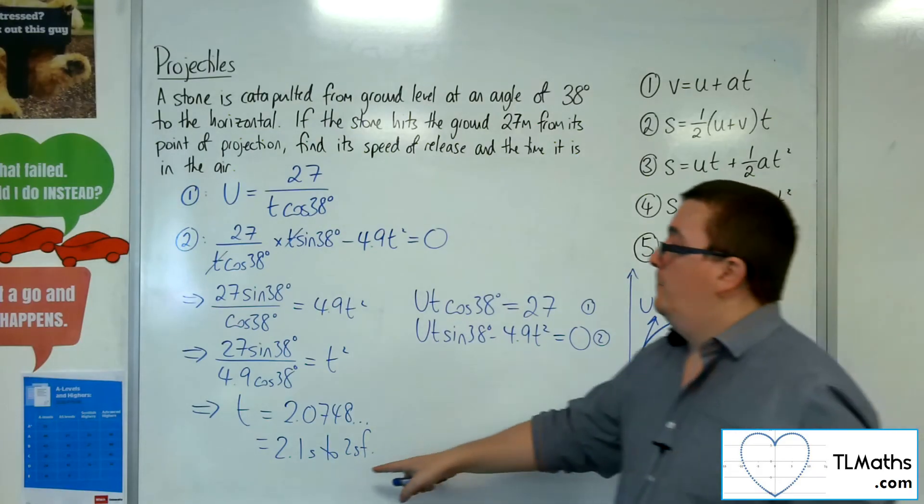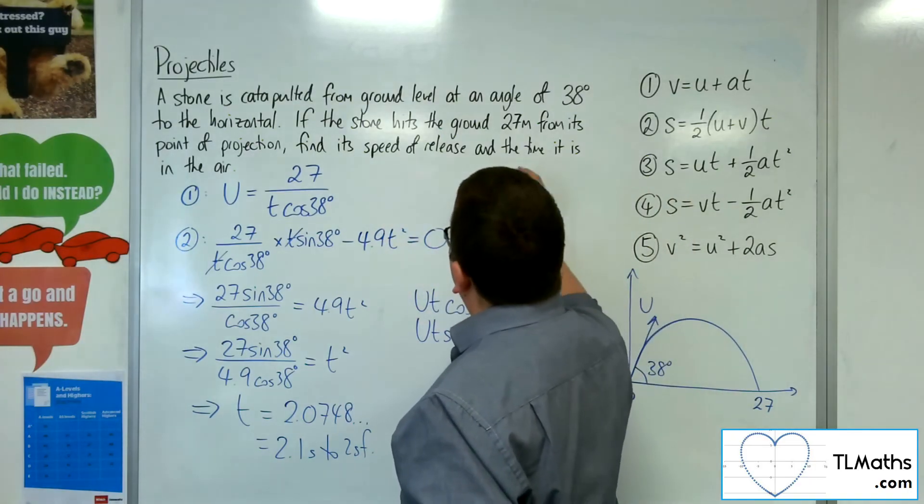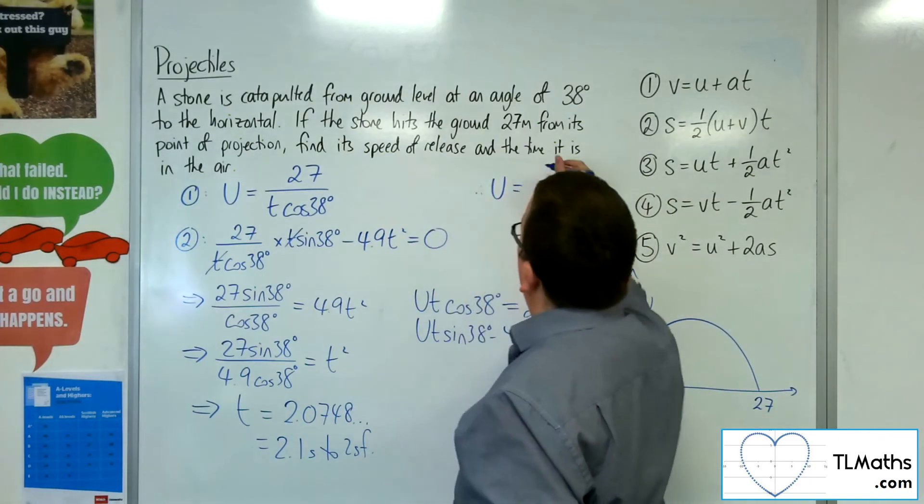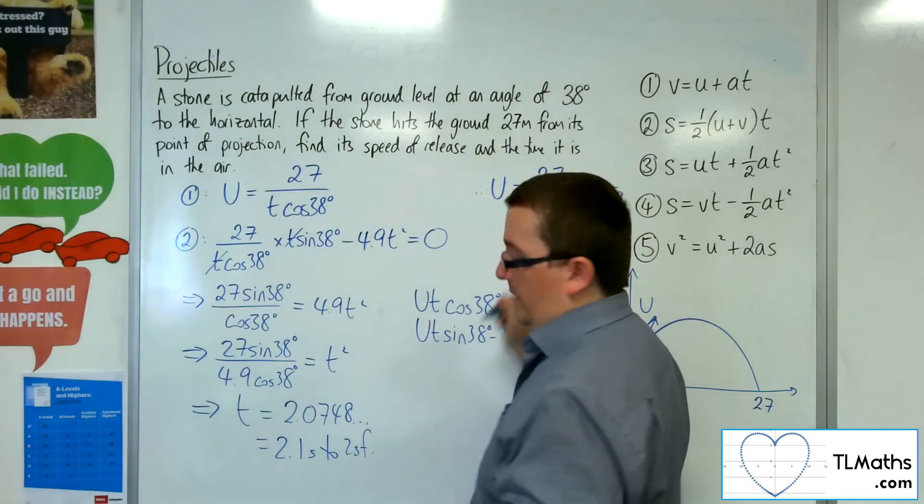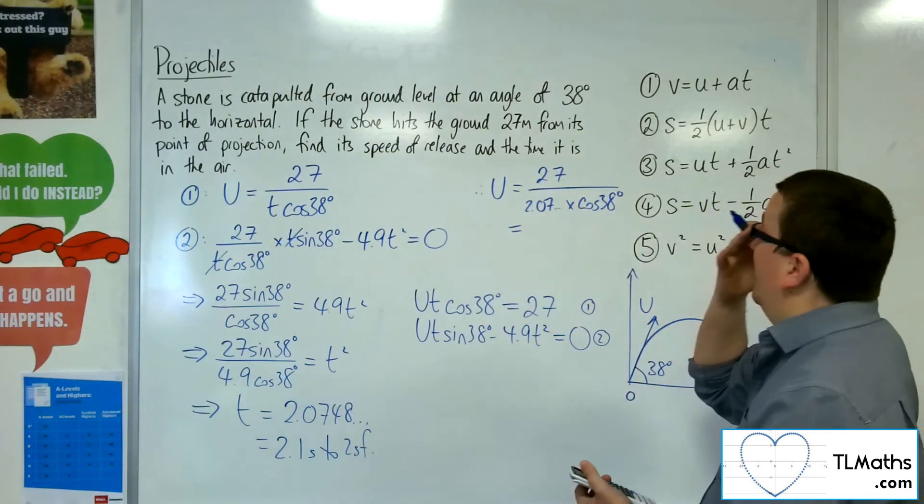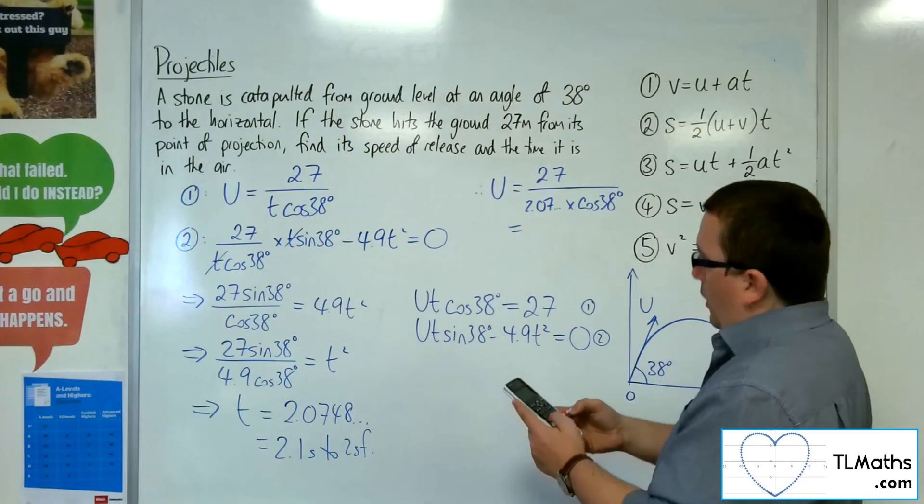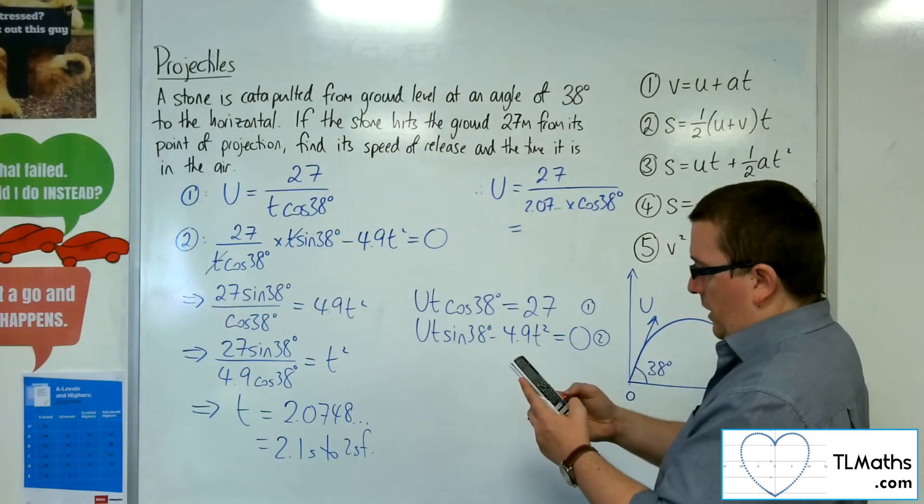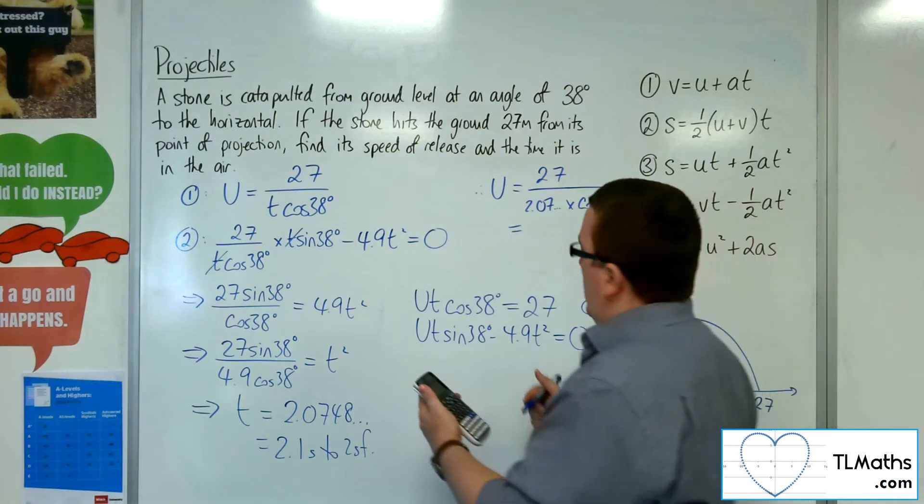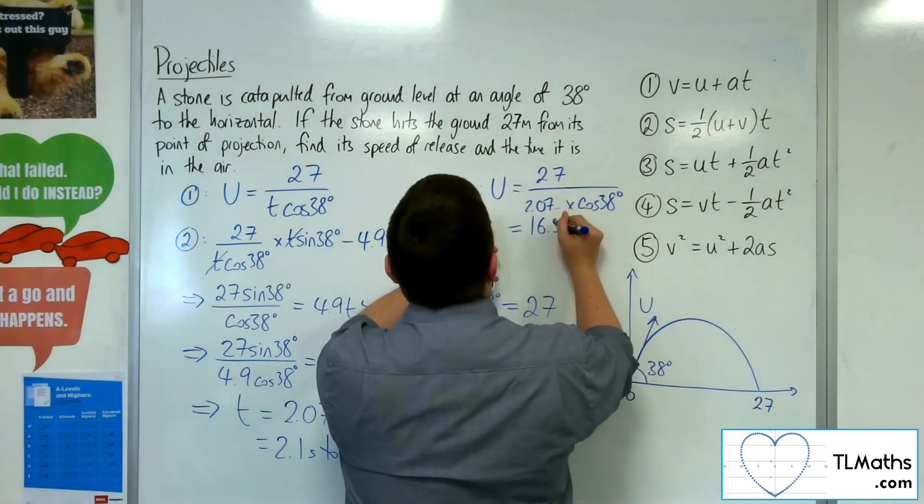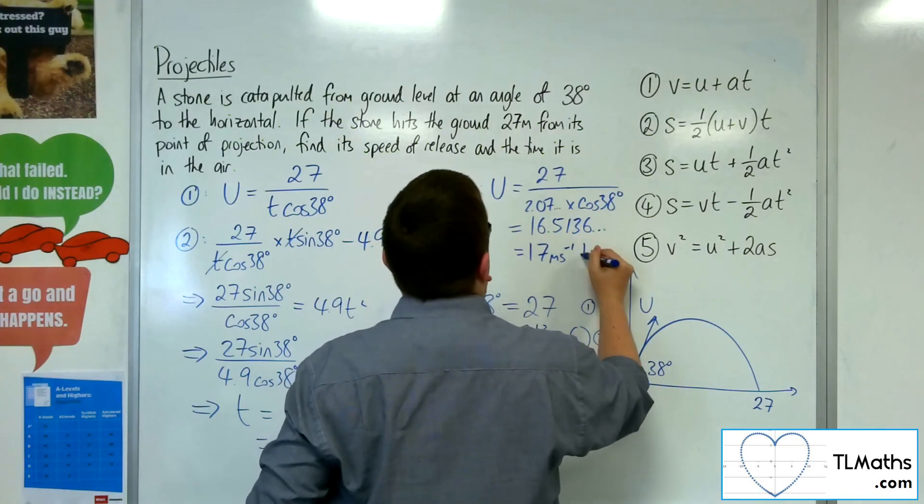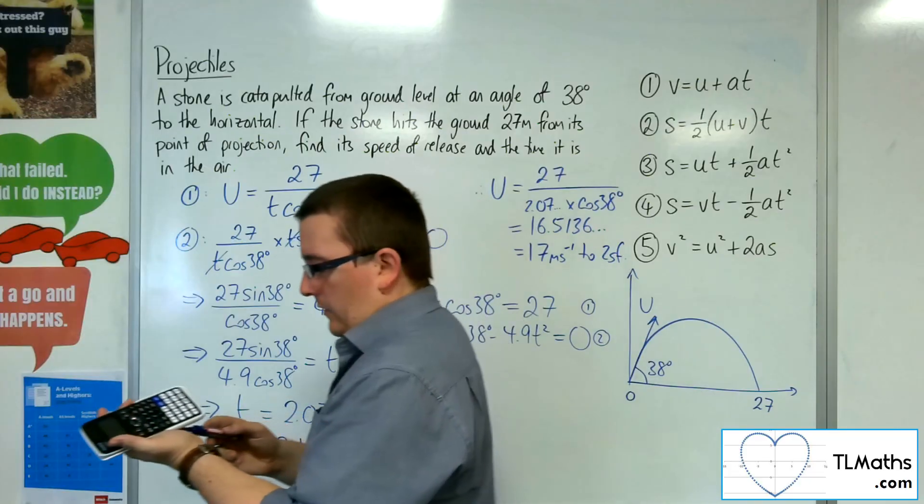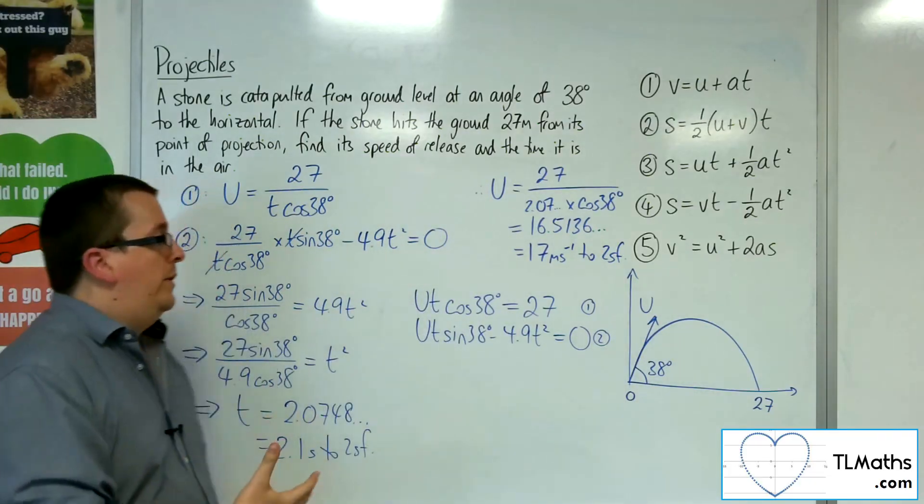I can now substitute that back into this equation to get u. So 27 over the 2.07, etc. times cos 38. So I want to keep that number in my calculator. Use the answer key here. So 27 over answer key times cosine 38. And I get 16.5136, etc. So 17 metres per second to two significant figures. And that's how I can solve this problem.